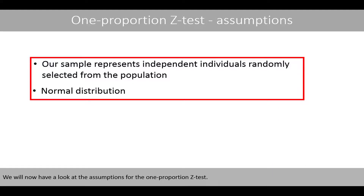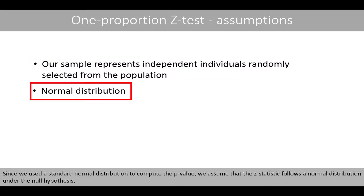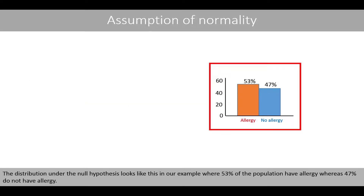We'll now look at the assumptions for the one-proportion Z-test. The first assumption states that our sample should represent independent individuals randomly selected from the population. Since we use the standard normal distribution to compute the p-value, we assume the Z-statistic follows a normal distribution under the null hypothesis. The distribution under the null hypothesis may only have two possible outcomes — such as allergy or no allergy — which is called the Bernoulli distribution, and definitely does not look like a normal distribution.